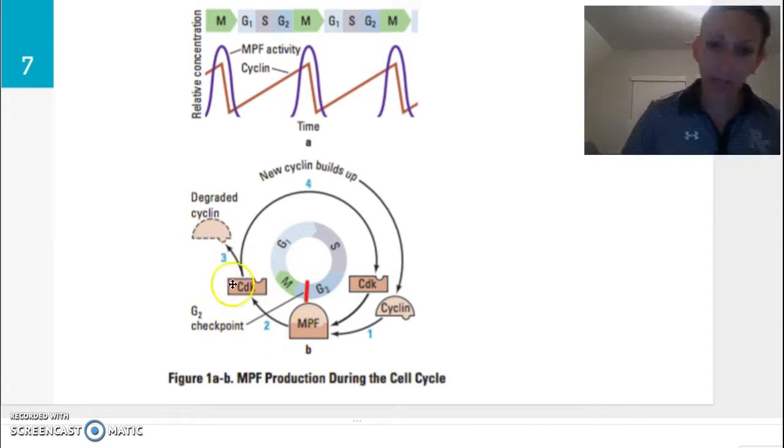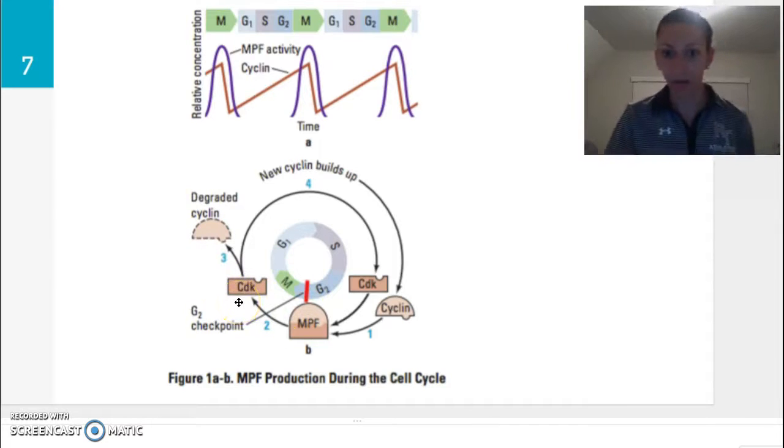So as our new cyclin builds up, we are going to have our cyclin combined with our cyclin-dependent protein kinase enzyme and then we will have our MPF together. This is the complex of that cyclin and the CDK. And then we are able to go into mitosis from there. The cyclin is degraded, but the CDK is preserved because it is an enzyme. Enzymes are not broken down and it can continue if the cell needs to divide again.